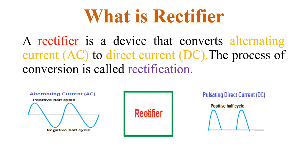Here we see in the diagram, this is a rectifier. The input of the rectifier is alternating current and the output is direct current, but the direct current is not pure or regulated — it is pulsating direct current. Pulsating means the output DC has some ripple, which is a fluctuation. Ripple means the AC component present in the DC output, and that ripple is not good for any electronic circuit.